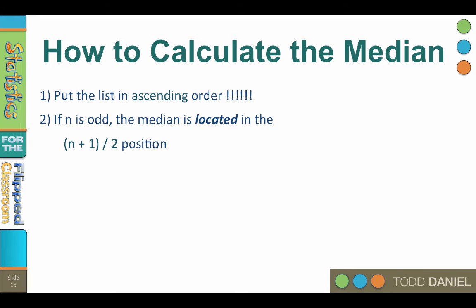Now if the total number in your sample is odd, then the median will be a single number that's located in the n plus 1 divided by 2 position.